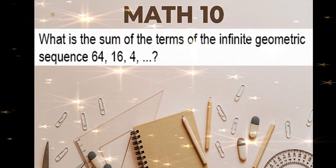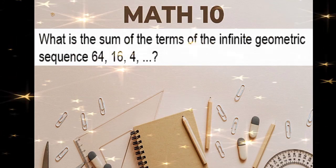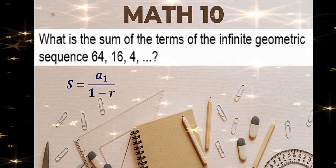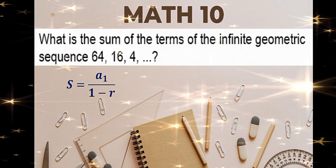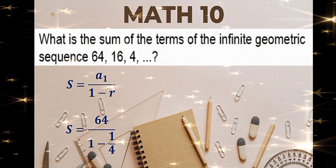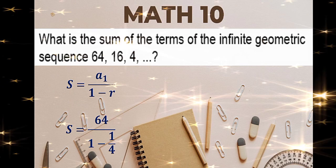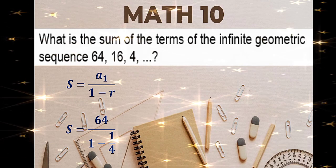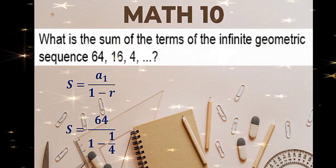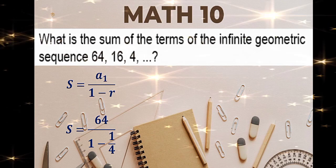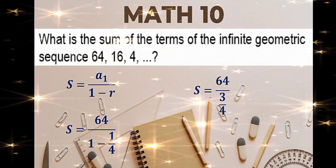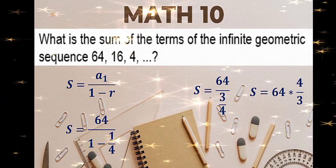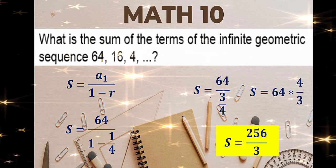What is the sum of the terms of the infinite geometric sequence 64, 16, and 4? This is the formula for the infinite. A sub 1 is 64 and the ratio is 4 divided by 16 or 1/4. Simplify, then keep-change-flip. Therefore, the sum is 256 divided by 3.